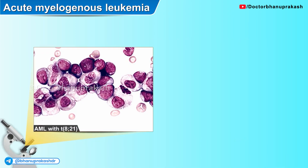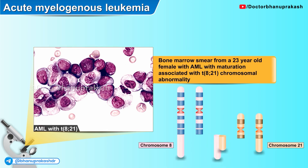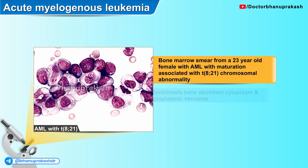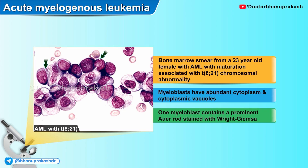Here is another histopathological image of a bone marrow smear from a 23-year-old female with acute myeloid leukemia with maturation associated with a translocation of t(8;21). The myeloblasts have abundant cytoplasm and cytoplasmic vacuoles, and one of the myeloblasts also contains a prominent Auer rod which can be appreciated when zoomed in.